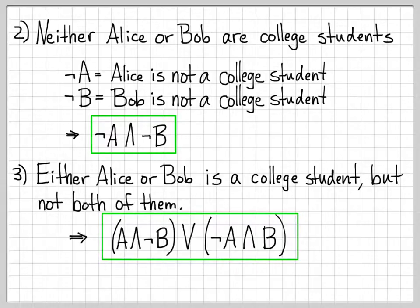These problems are not that difficult. The key thing is, up front, when you define your symbols — in this case A and B — just make sure you write them as logical statements, declarative sentences that are either true or false. Then writing out logical expressions that mean the same thing as the English sentence is pretty straightforward.